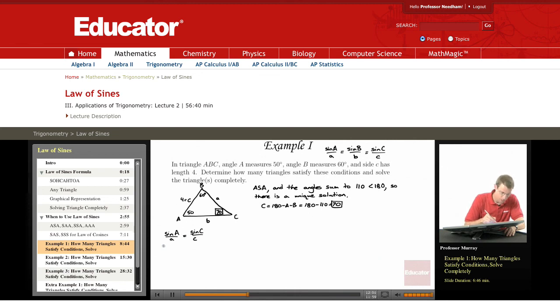So sine A is sine of 50 over a is equal to sine of 70 over c is 4. And if I cross multiply there, I get 4 sine 50 is equal to a sine 70, or a is equal to 4 sine 50 over sine 70.